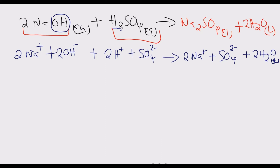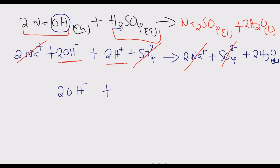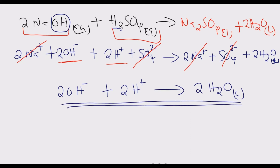Now we cancel spectator ions — those that appear unchanged on both sides. We have 2Na⁺ on both sides and SO₄²⁻ on both sides, so we cancel them. What remains is: 2OH⁻ + 2H⁺ → 2H₂O, which can be simplified to OH⁻ + H⁺ → H₂O. This is the ionic equation for the reaction between sodium hydroxide and sulfuric acid giving sodium sulfate and water.